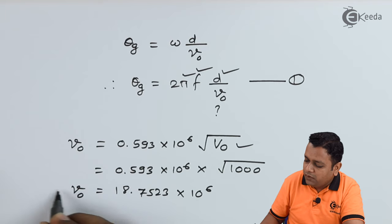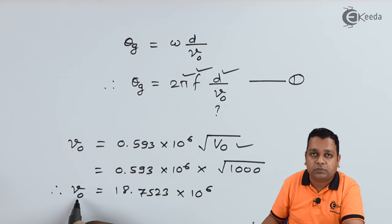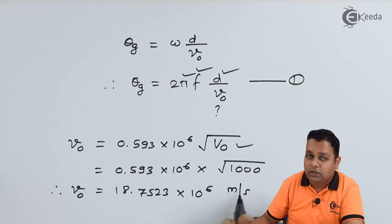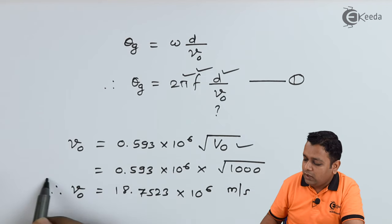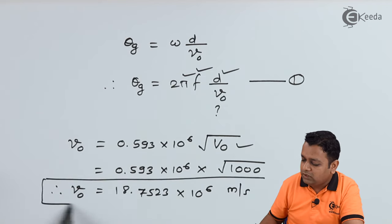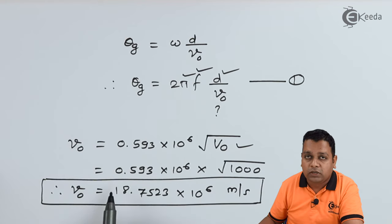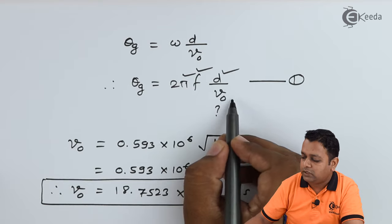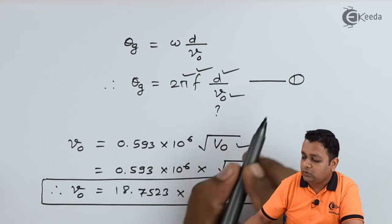Getting the square root here and multiplying it with the remaining terms, in this particular step we obtain the answer as 18.7523 × 10^6. As this is the velocity denoted by small v sub 0, velocity is always measured in terms of meters per second. So I outline this particular intermediate value. This intermediate value can be substituted into equation number 1. Now v0 is available.